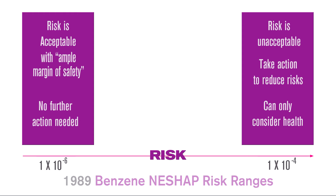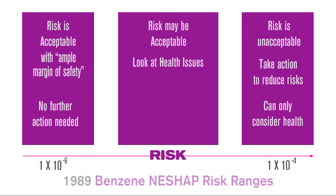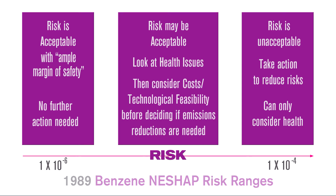If the risk to a person is between one in a million and 100 in a million, we're going to look further into it to see how expensive it is to fix the problem and what we can possibly do to reduce those risks. To summarize: we first decide what is safe, considering health effects only. Then we determine what is an ample margin of safety, considering costs and technological feasibility. You can imagine the slow progress the agency could make in protecting public health under this approach.